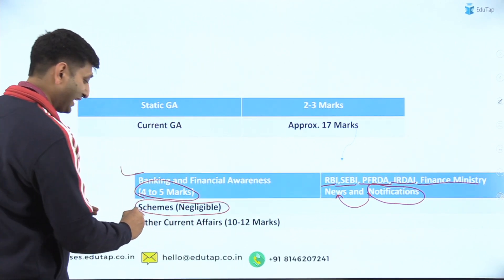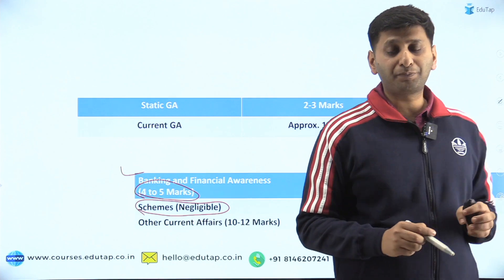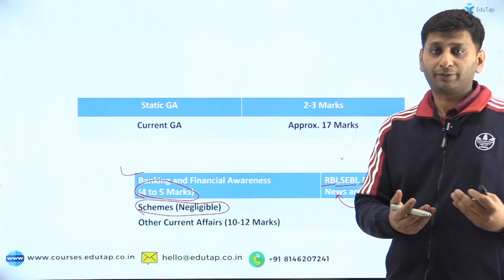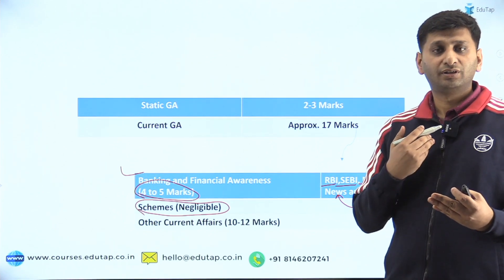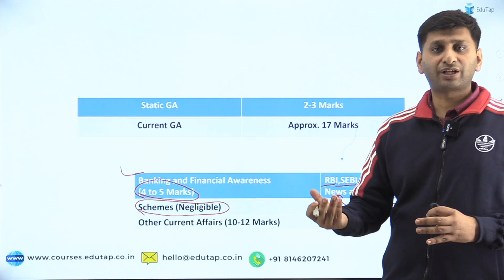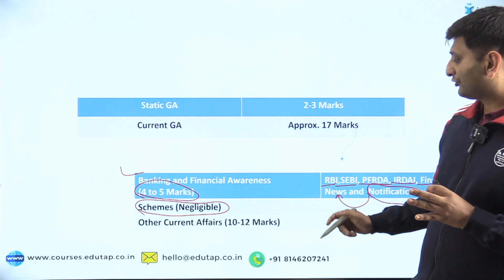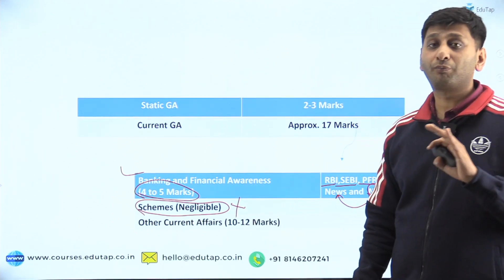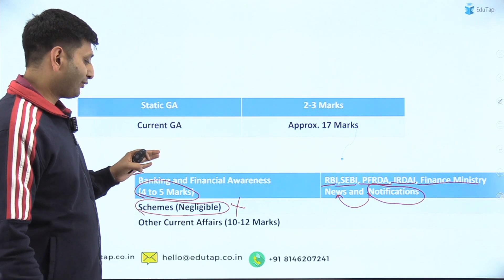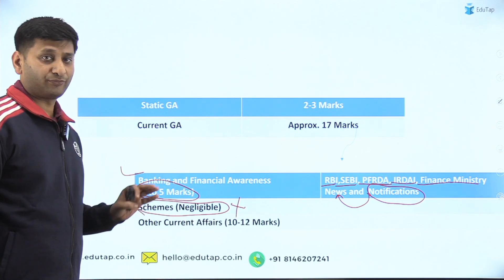Then schemes — negligible for SEBI. In RBI it had huge weightage, but not here. Why? Because in RBI, there is a component called social issues in phase two which has a lot of schemes related to poverty, health, education, malnutrition, urbanization, rural areas — schemes related to these aspects are launched every now and then. But in the SEBI syllabus, there is no social issues component. I don't see schemes being asked much in future either, though one or two marks can be asked — one mark was asked in 2020 also. One clear difference you need to observe between RBI and SEBI is that you need not do schemes.